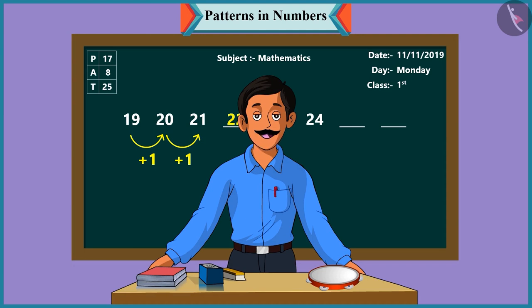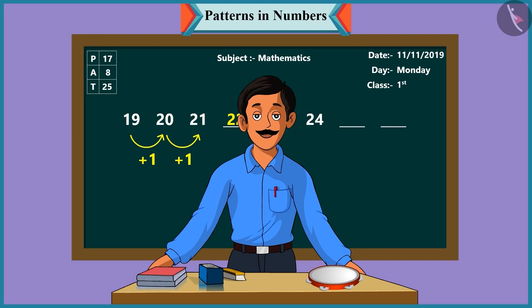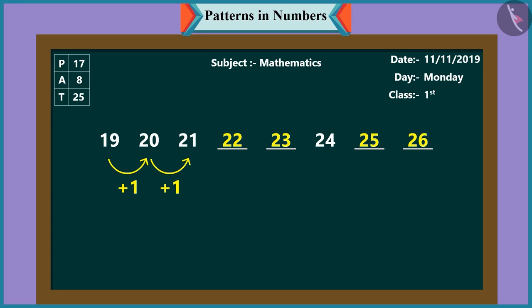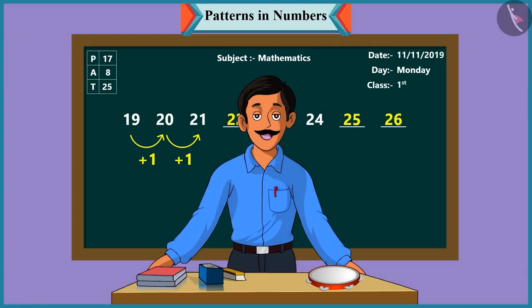Come, Pinky. Now it's your turn. You take this pattern forward. In this pattern, after 24 comes 25 and after 25 comes 26. Very good, Pinky.